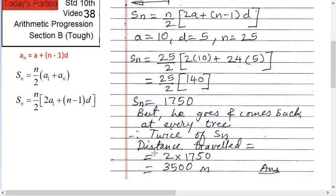So twice of SN, distance traveled equals to 2 into 1750 — that's 3,500. That's the answer.